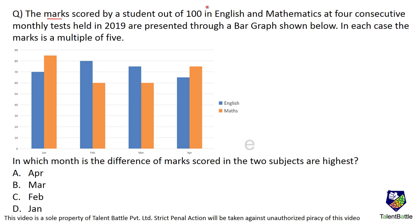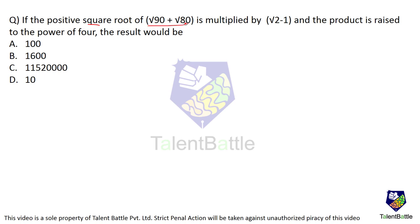The marks scored by a student out of 100 in English and Mathematics at 4 consecutive monthly tests in 2019 are presented in a bar graph. In which month is the difference of marks in the two subjects highest? Observing: January 75 and 65 (difference 10), February 75 and 60 (difference 15)... actually March 80 and 60 (difference 20), April 70 and 85 (difference 15). The difference is highest for the month of February — option C.